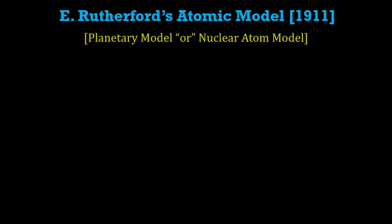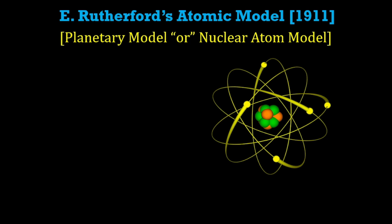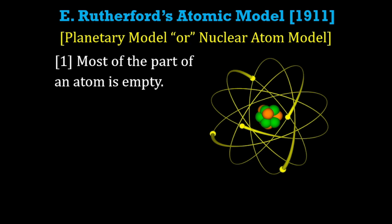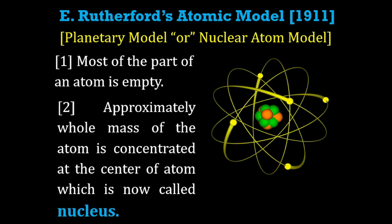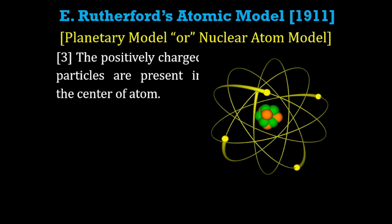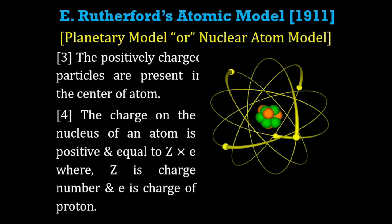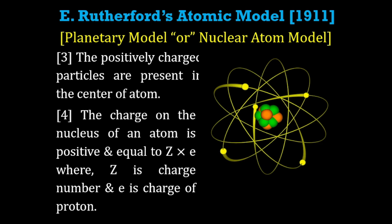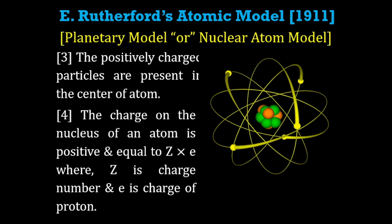The atomic model is also known as the planetary model or nuclear atom model. Most part of the atom is empty. Approximately, the whole mass of the atom is concentrated at the center, which is now called the nucleus. The positively charged particles are present at the center of the atom. The charge on the nucleus is positive and equal to Z multiplied by E, where Z is the charge number and E is the charge of a proton.